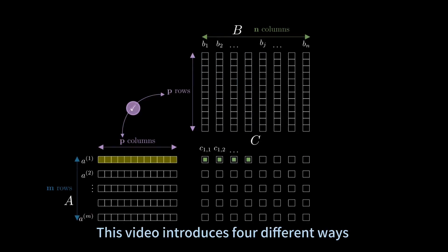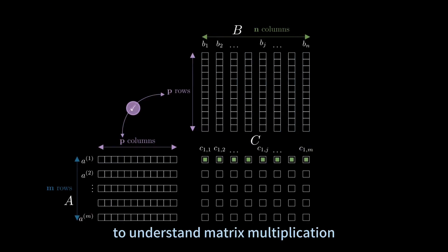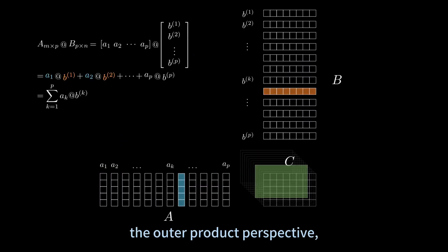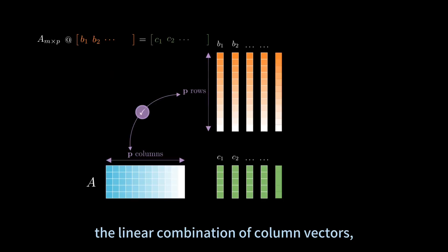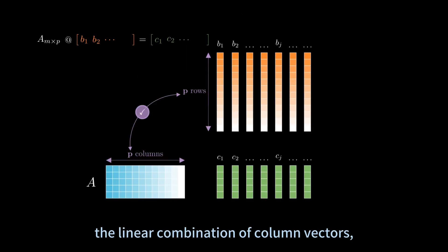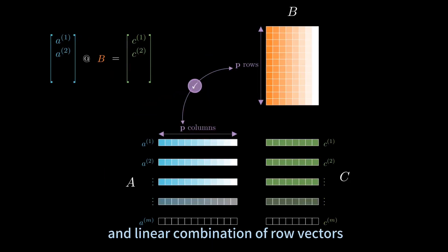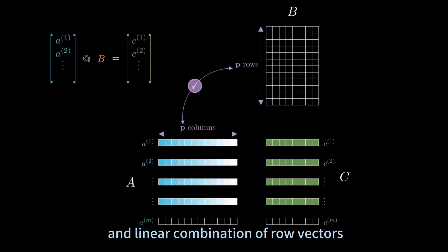This video introduces four different ways to understand matrix multiplication: the inner product perspective, the outer product perspective, the linear combination of column vectors, and linear combination of row vectors.